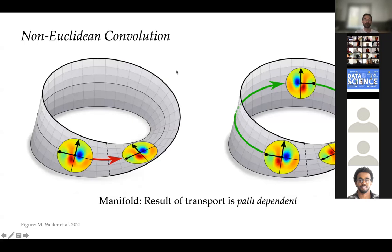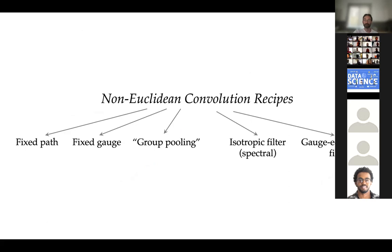For more exotic structures such as non-orientable manifolds — of which the Möbius strip is the classical example — non-orientable means the normals of the surface are discontinuous. If I move along the green path versus the red path, I will flip the filter because of the lack of orientability. In this case the ambiguity is a reflection transformation.